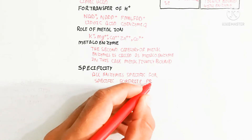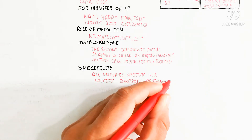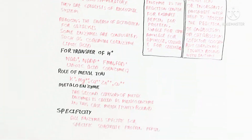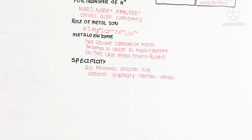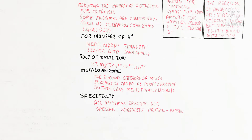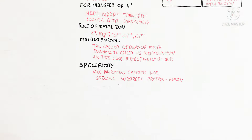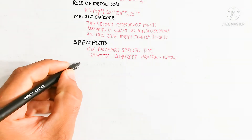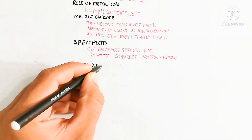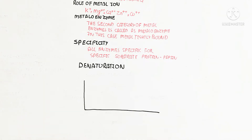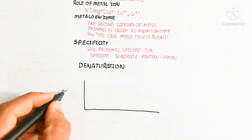The specificity of an enzyme means all enzymes are specific for a specific substrate. For example, pepsin is specific for protein digestion in the stomach.